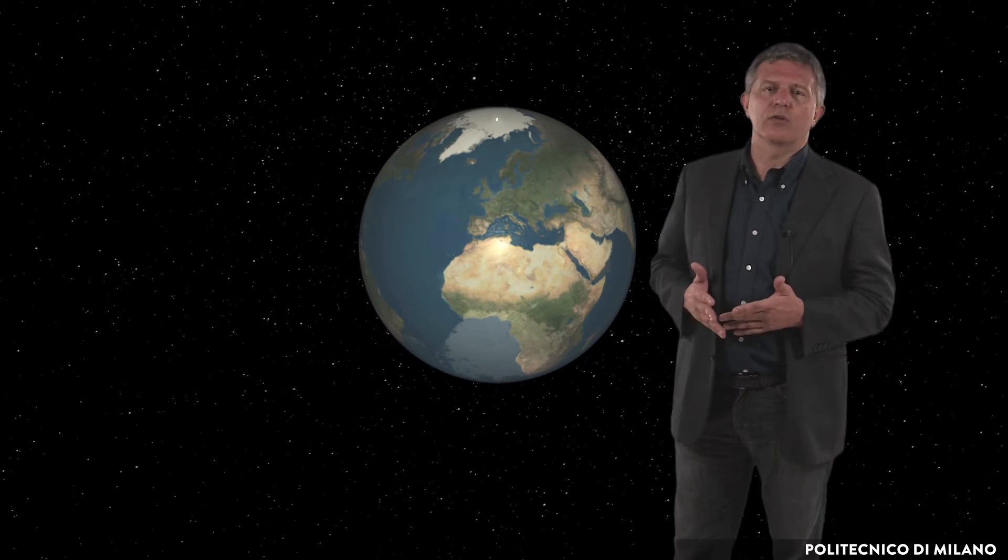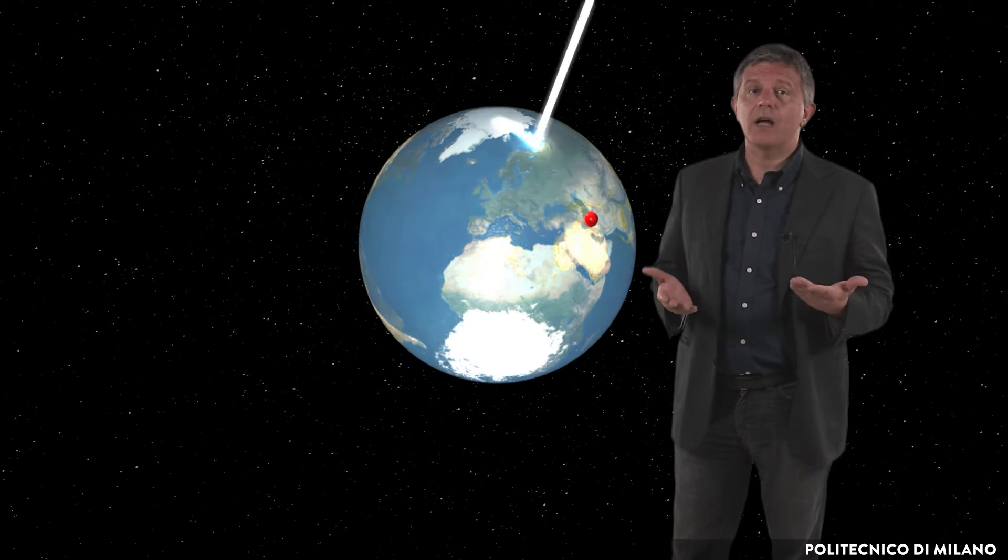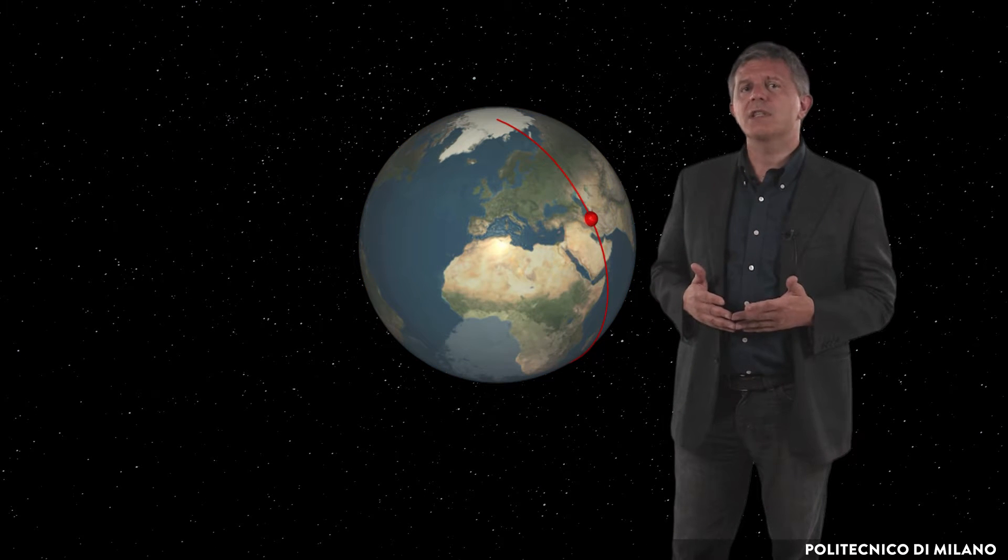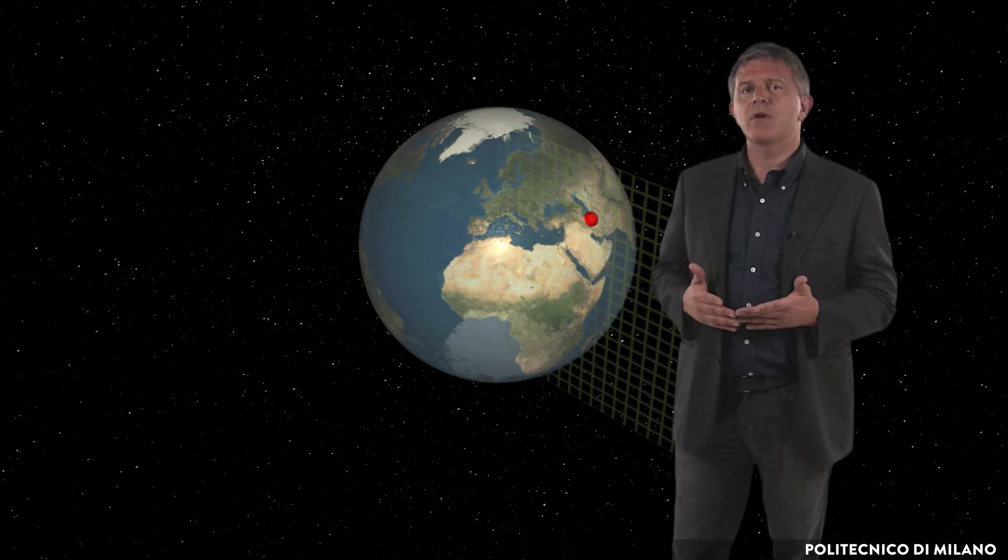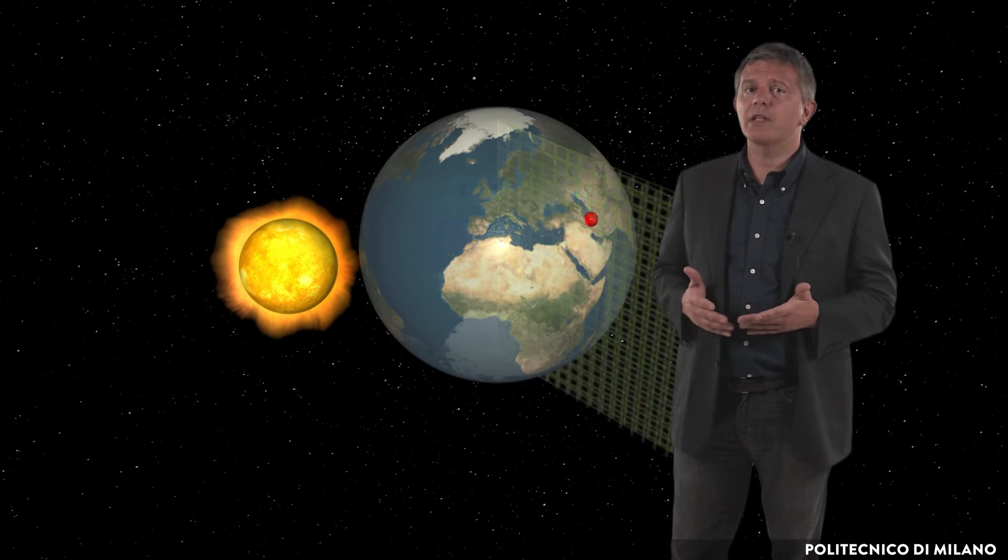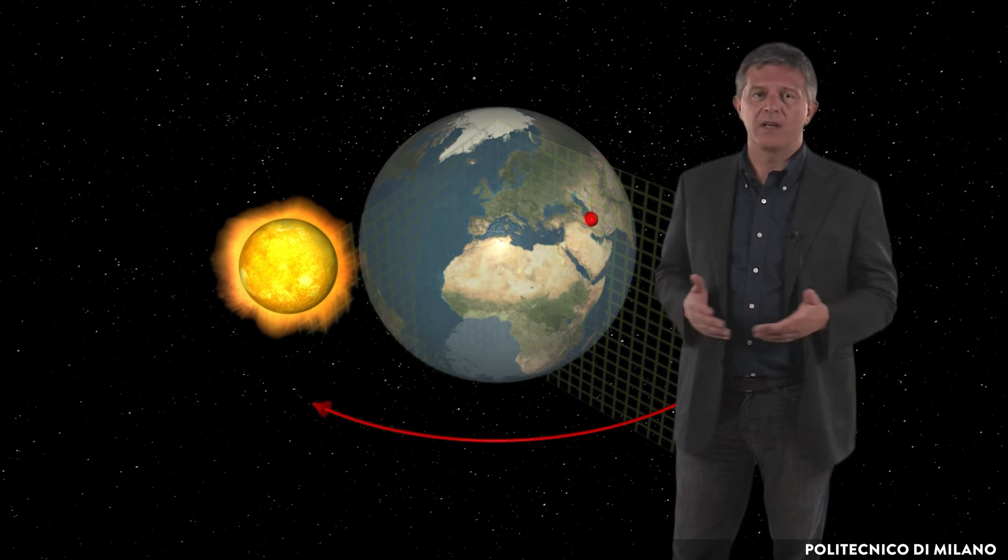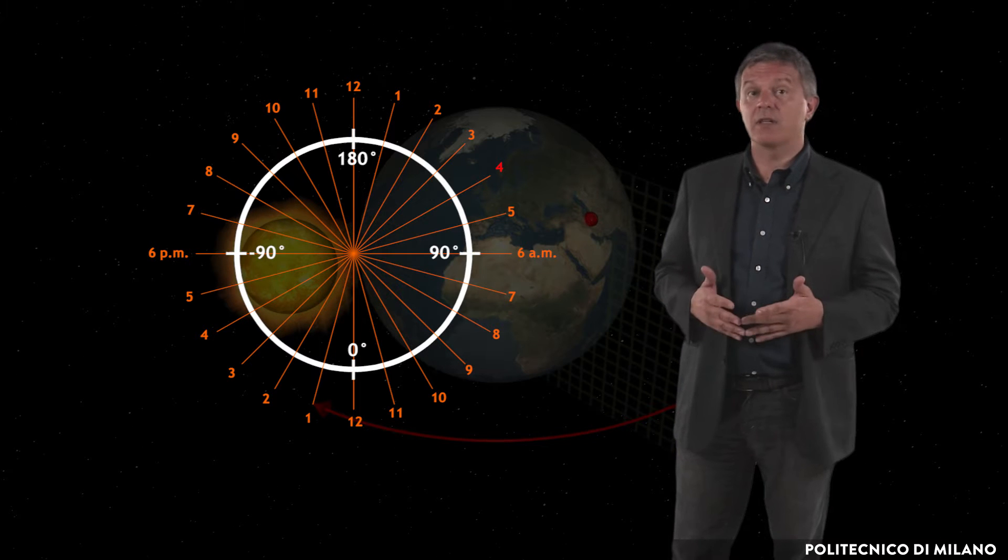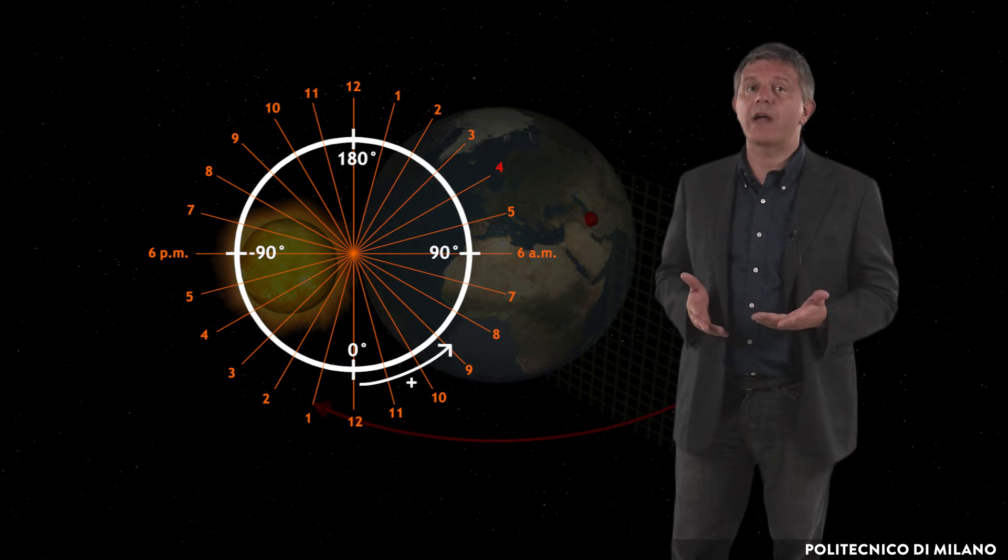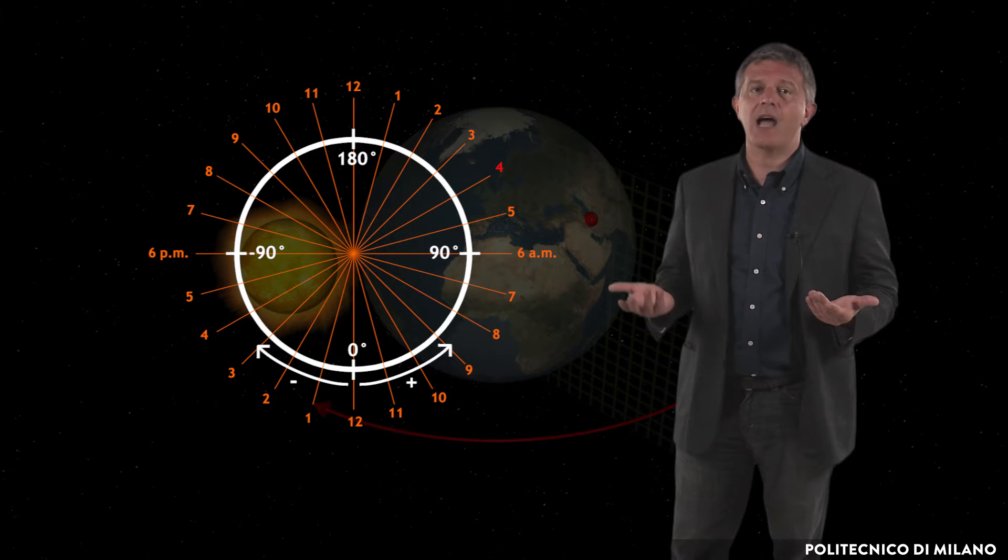The Earth's position during its own rotation may be defined by the hour-angle omega, which is the angular distance between the meridian of the observer and the meridian whose plane contains the Sun. This angle varies 15 degrees per hour. It is zero at noon and has positive values in the morning and negative in the afternoon.